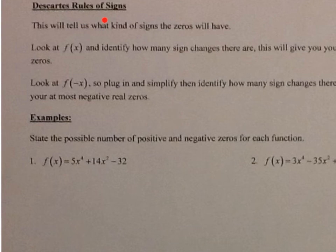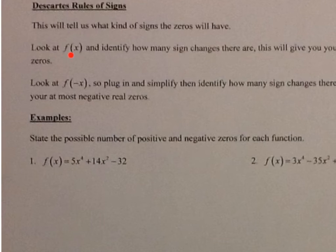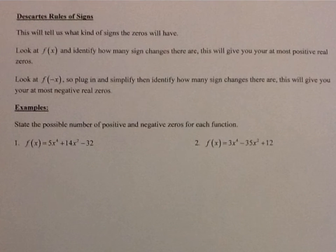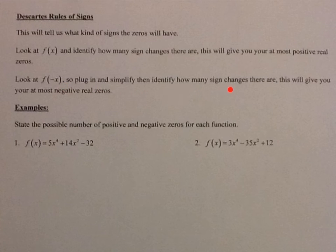Now let's look at Descartes' rule of signs. This tells you what kind of signs your zeros will have — whether you have positive or negative real zeros. Look at f of x and count how many sign changes there are; this gives you your at most positive real zeros. Then look at f of negative x — plug in negative x and simplify — and count sign changes; this gives your at most negative real zeros.